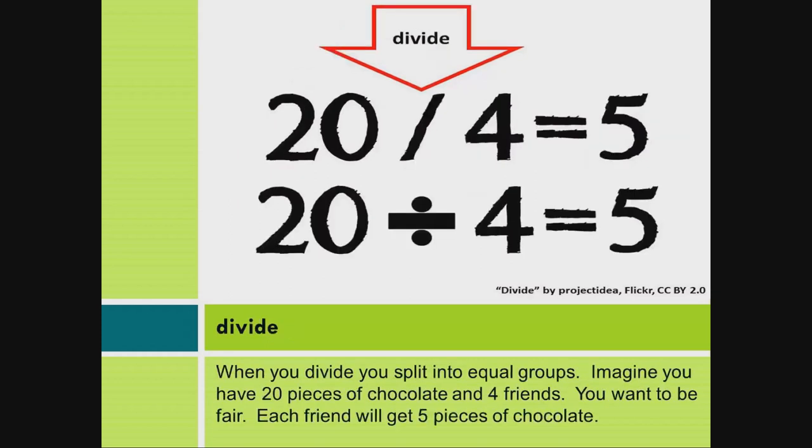Divide. When you divide, you split into equal groups. Imagine you have 20 pieces of chocolate and four friends. You want to be fair. Each friend will get five pieces of chocolate.